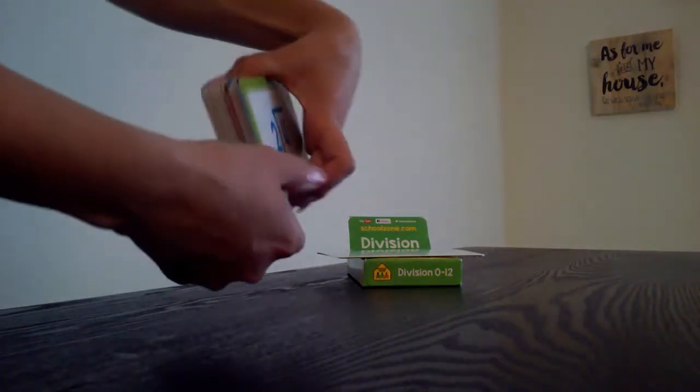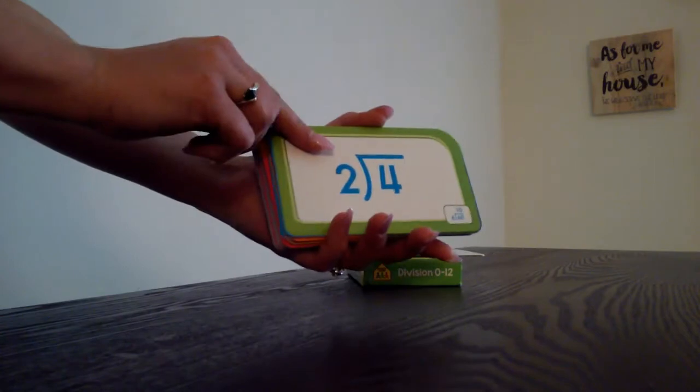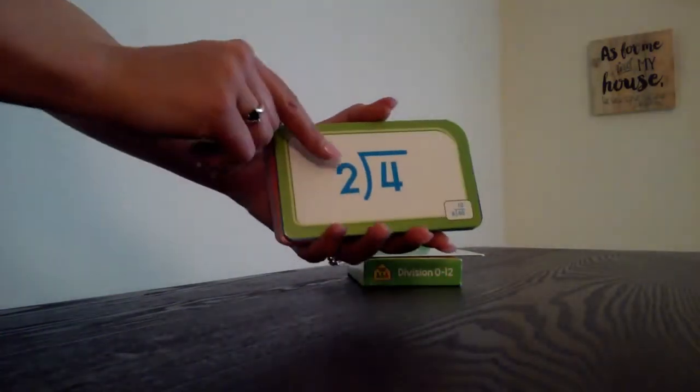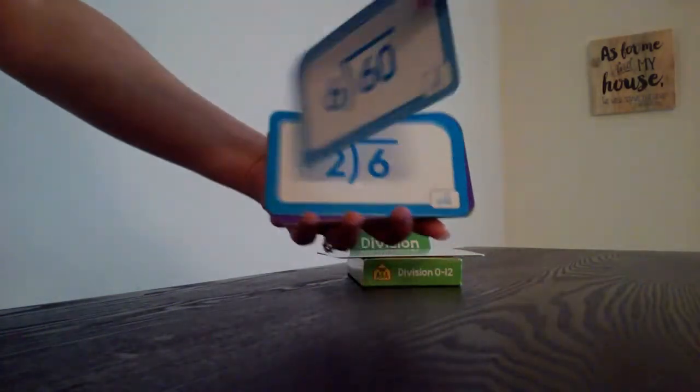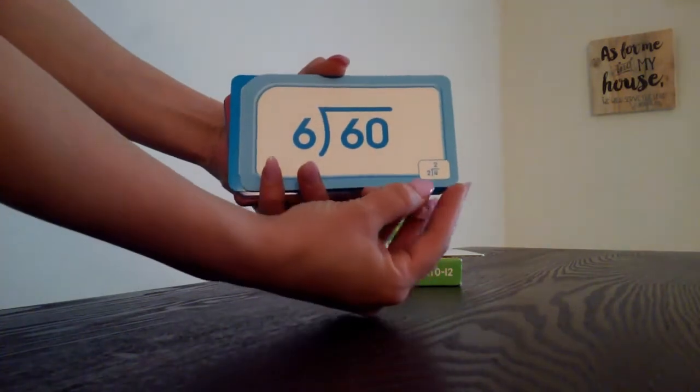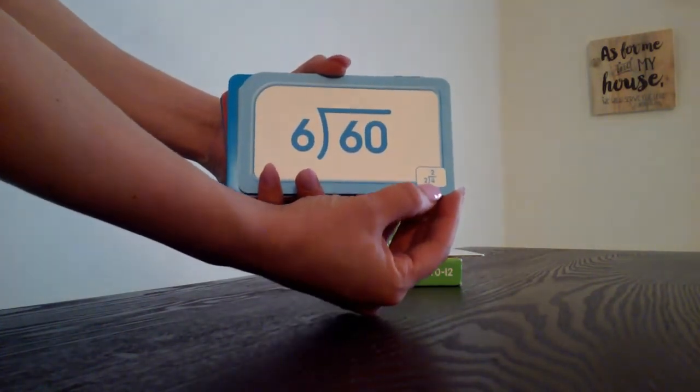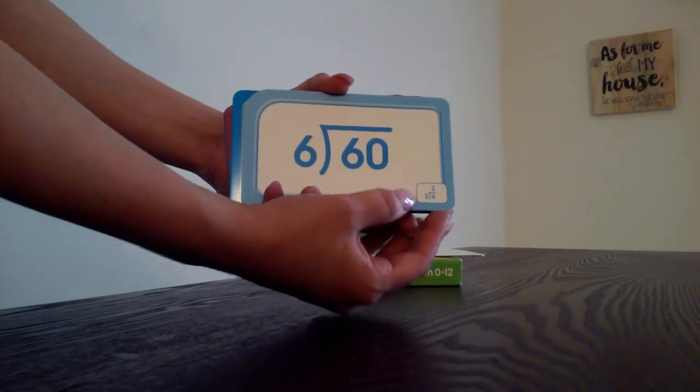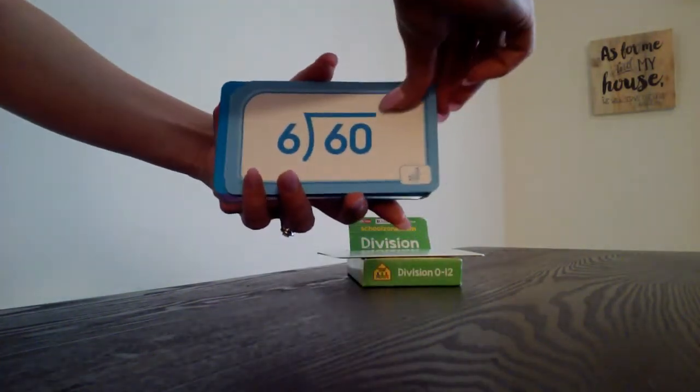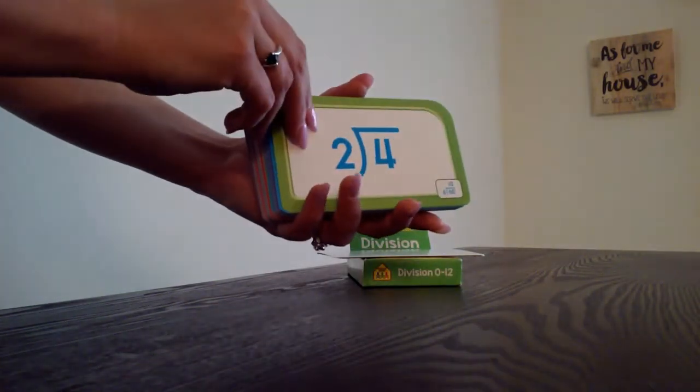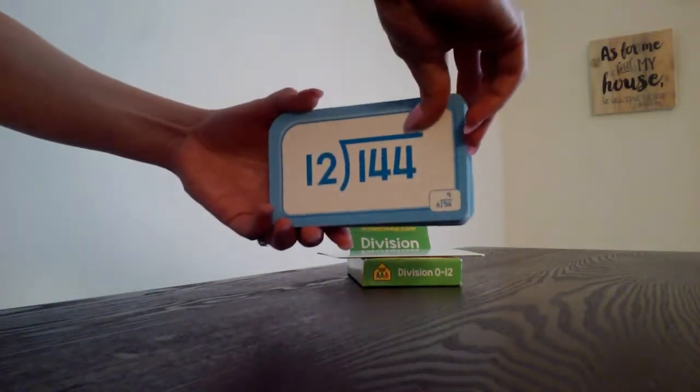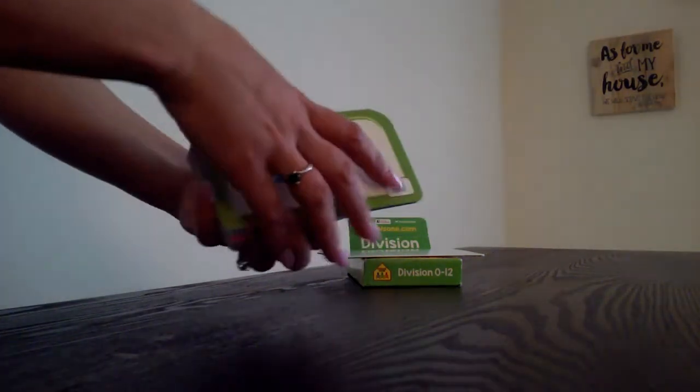And then when you're doing the cards with your little one, you're showing them the card. They're looking at the card there. The answer is on the back here for you. So they're looking at the problem, two divided by four, and the answer is up there for you. The answer is two. So they're seeing this side and you're looking at the other side. You're seeing the answer and seeing what they're looking at.